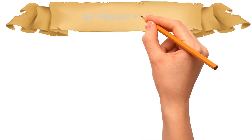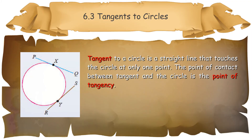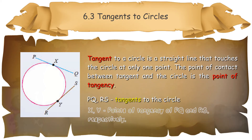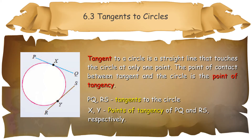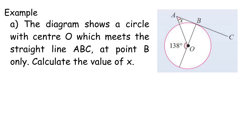6.3 Tangent to a circle is a straight line that touches the circle at only one point. The point of contact between the tangent and the circle is the point of tangency. Property 1: The radius of a circle that intersects with the tangent at the point of tangency will form a 90 degree angle with the tangent. Example A: The diagram shows a circle with center O which meets the straight line ABC at point B only. Calculate the value of X. Angle OBA equals 90 degrees.